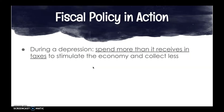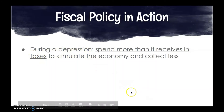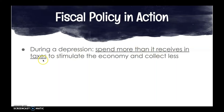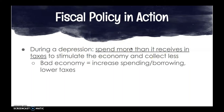Fiscal policy in action: let's pretend we're in a depression — an economic downturn at the bottom with a lot of unemployment. The government will spend more than it receives in taxes to stimulate the economy and collect less. So in a bad economy, we will increase spending, increase borrowing, and lower taxes. This is an example of expansionary fiscal policy.